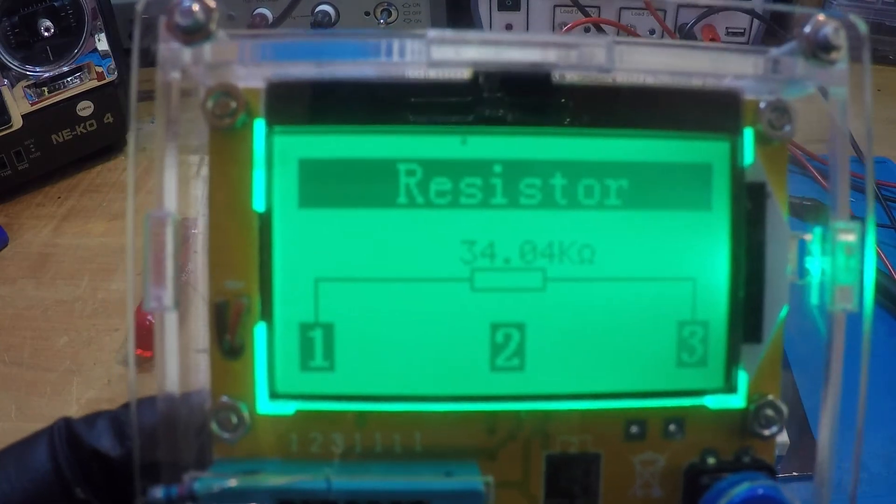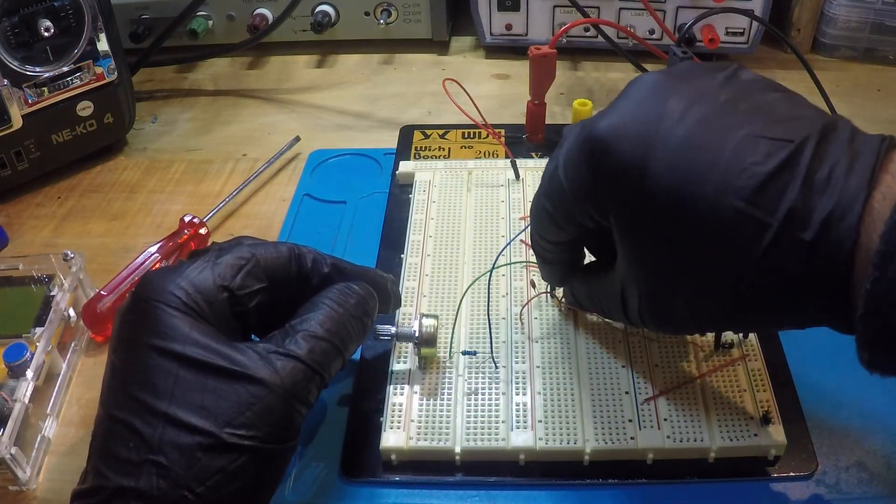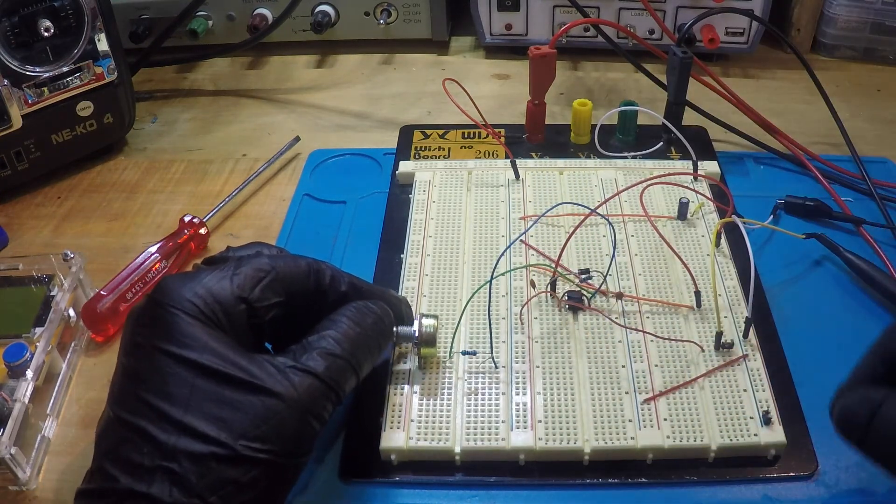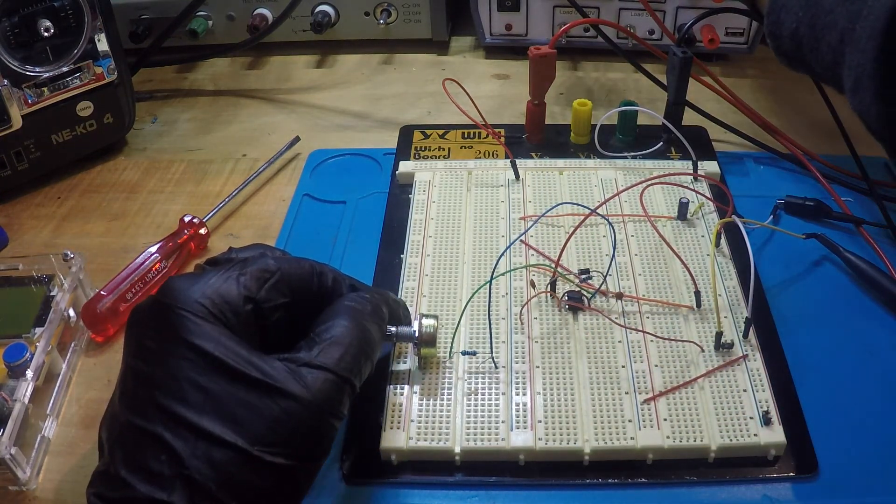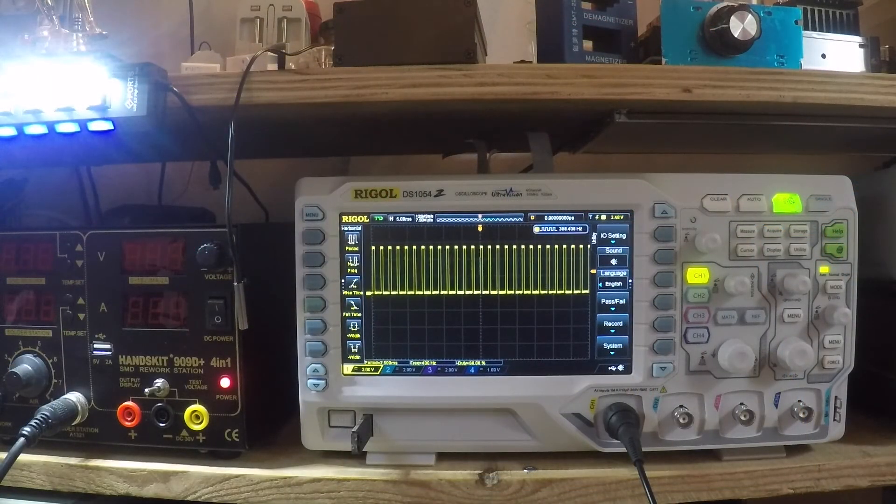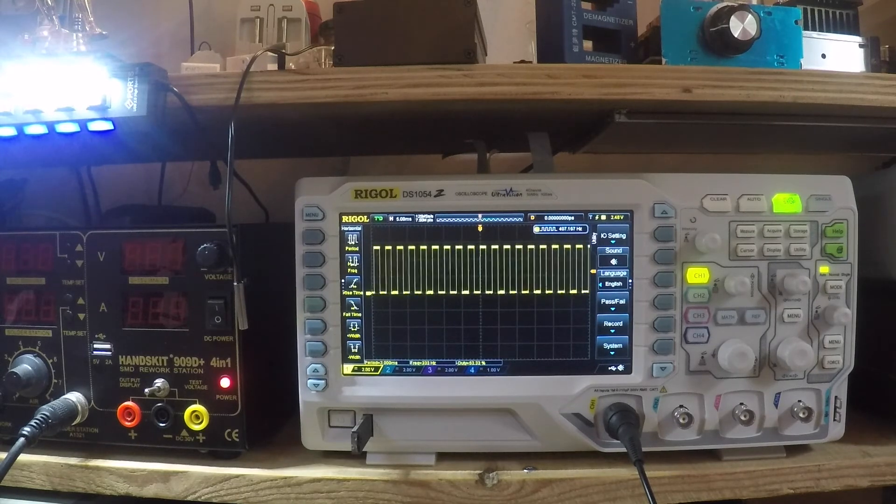Now let's use a 34k resistor. We should get a higher frequency. And here you guys can see we have 400 Hz. It's a higher frequency.